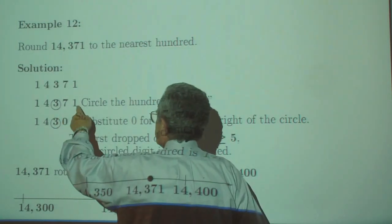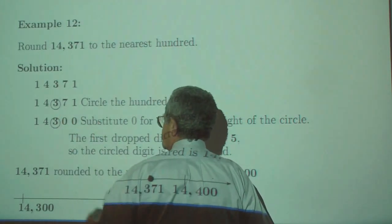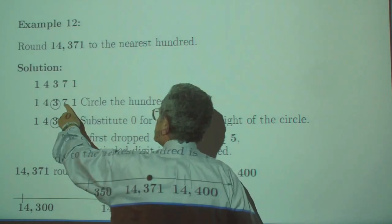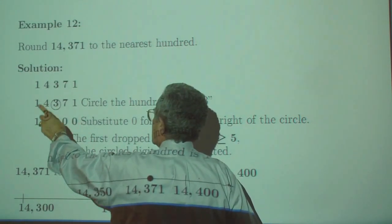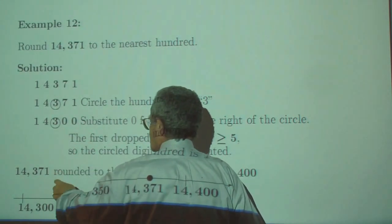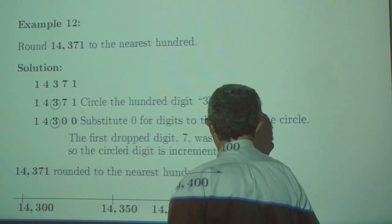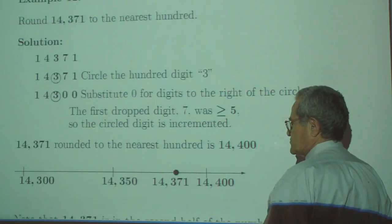Replace all the numbers below that by zeros. If the first digit we dropped is 5 or more, bump the three to a 4. So this gets rounded to 14,400.